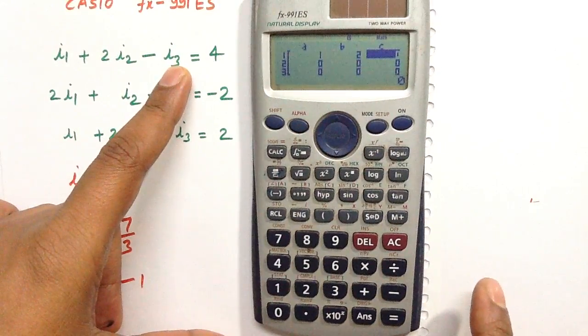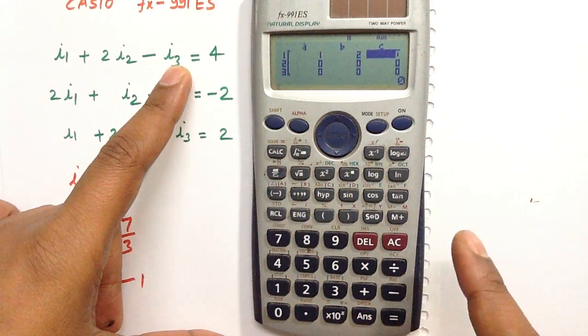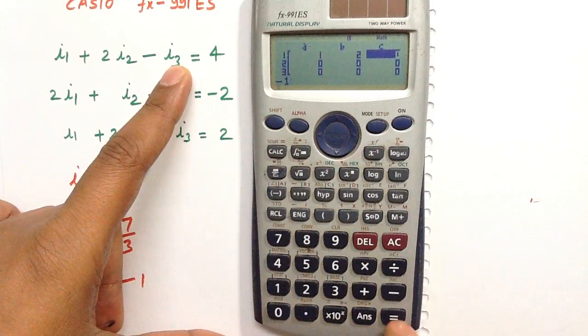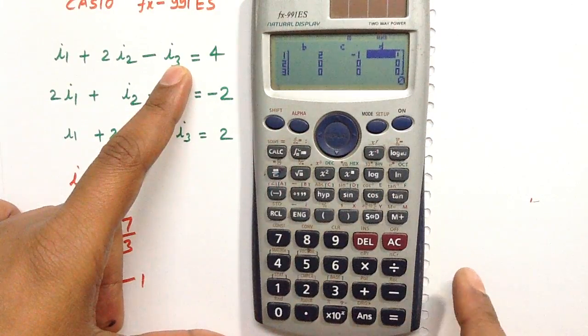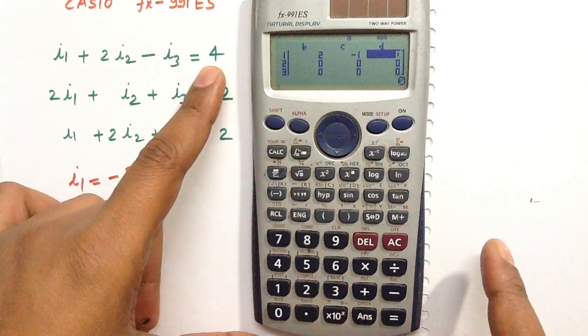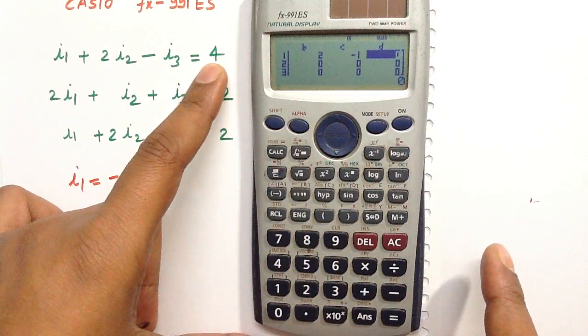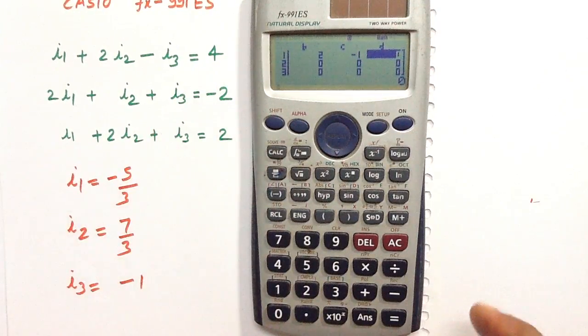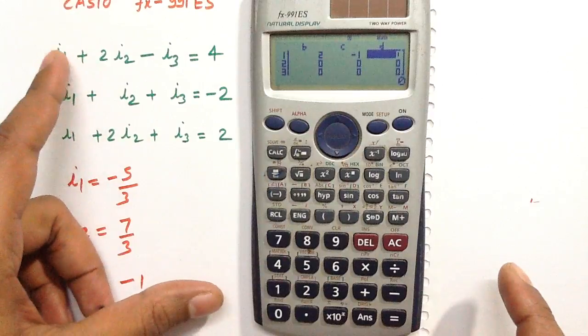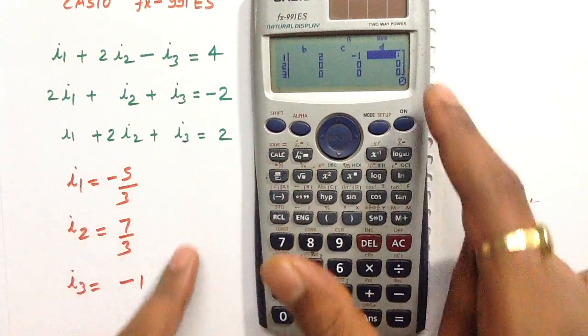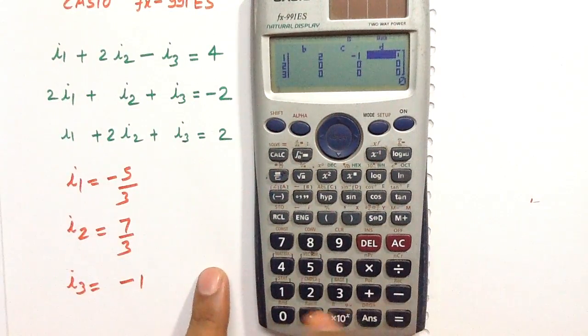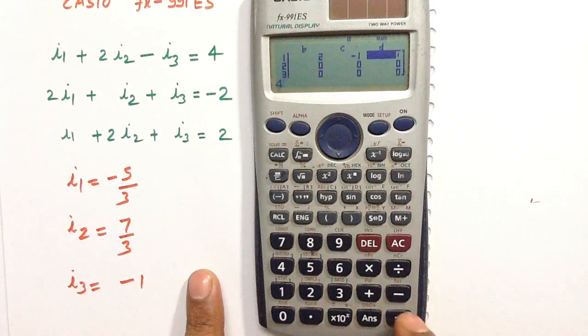The coefficient of I3 is minus 1, which is the value of C. So press minus 1 and press equals to feed the value. The constant which is appearing on the right hand side of this first equation is 4. This is the value of D, so press 4 then equals.